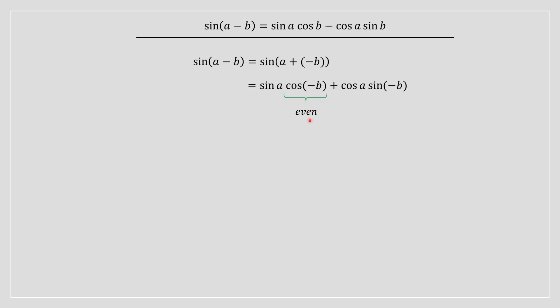So you can rewrite this as just cos of b, and over here we have sine of negative b, and this is an odd function. Therefore if you've got a negative inside the bracket, you are going to have a negative outside the bracket when you take the sine of this.